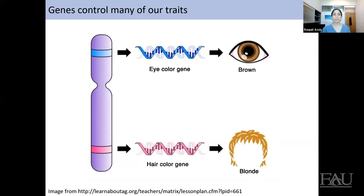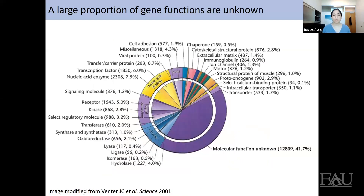The more melanin you have, the darker the color. Brown eyes have a lot of melanin, whereas blonde hair has very little. Unfortunately, a large proportion of gene functions are completely unknown. A pie chart from after the human genome was sequenced in 2001 shows that about 42% of gene functions are completely unknown. This is a major question in genetics: what are these genes doing and how do they contribute to our evolution and diseases?